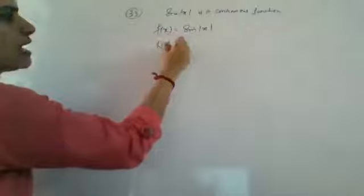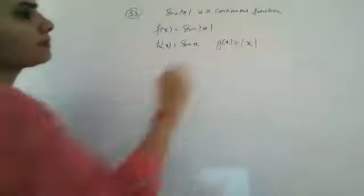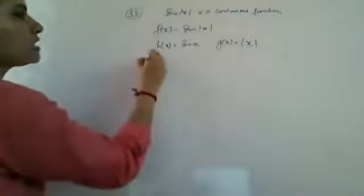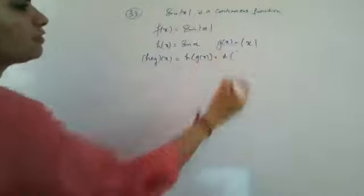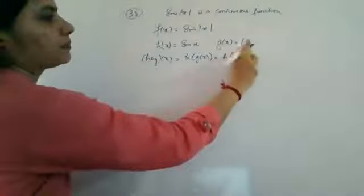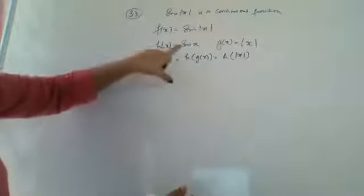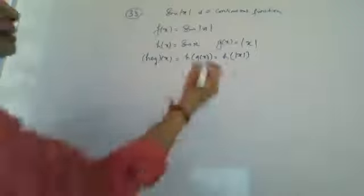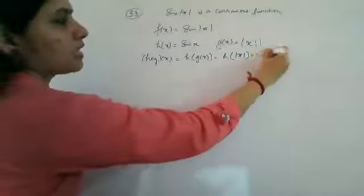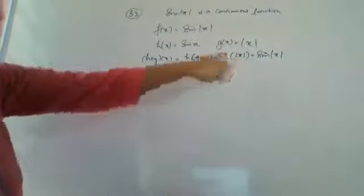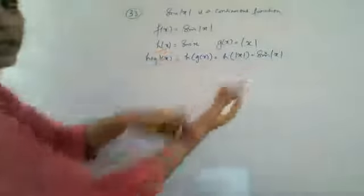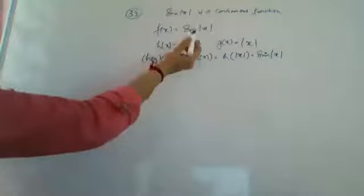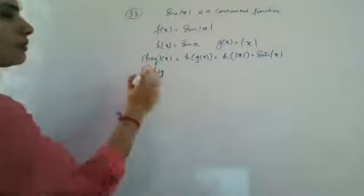Suppose we take h of x as sine x and g of x as mod x. We have to see which composition gives f of x, that is sine of mod x. Starting with h composition g of x, which is h of g of x — h of mod x. If h of x gives sine of x, then h of mod x gives sine of mod x, which is the required function. So h composition g is your f.